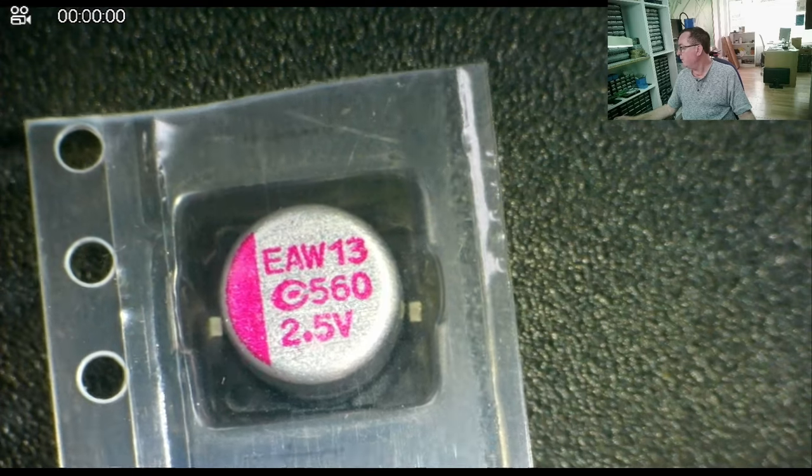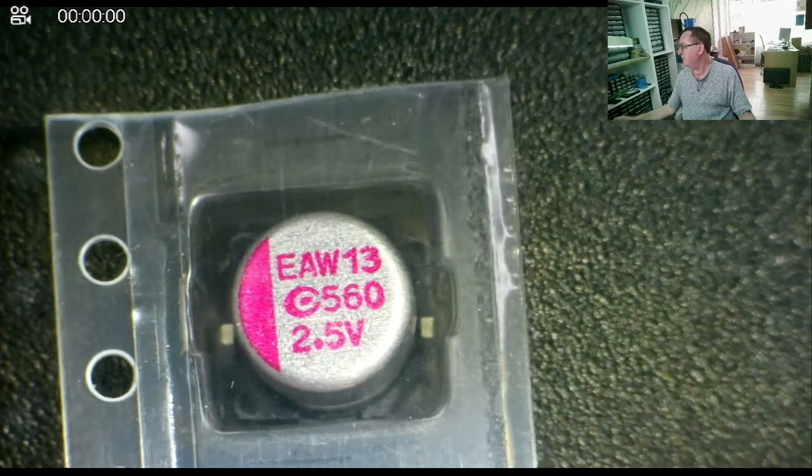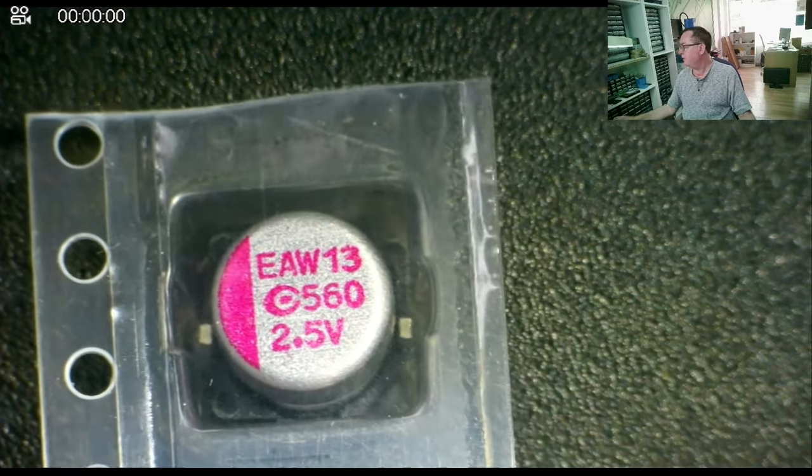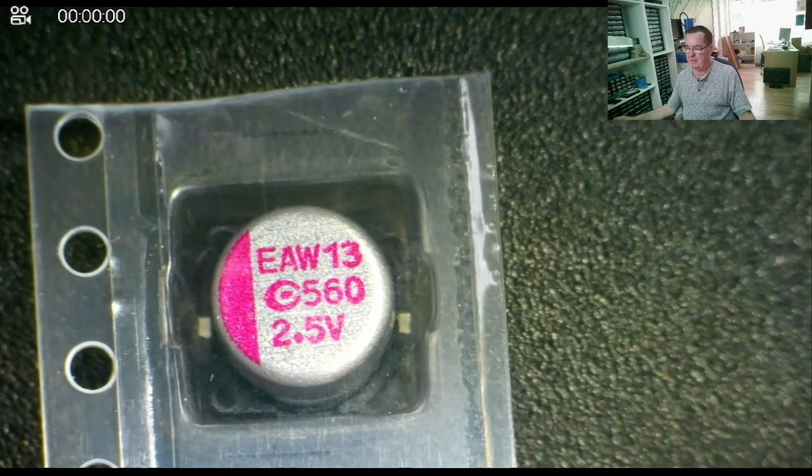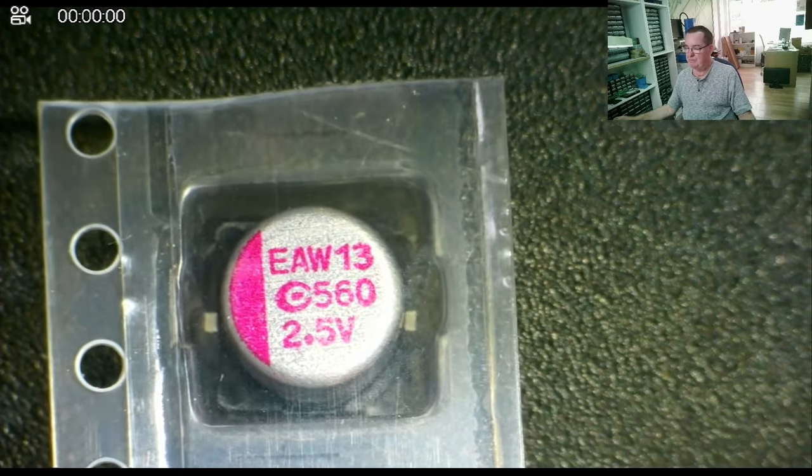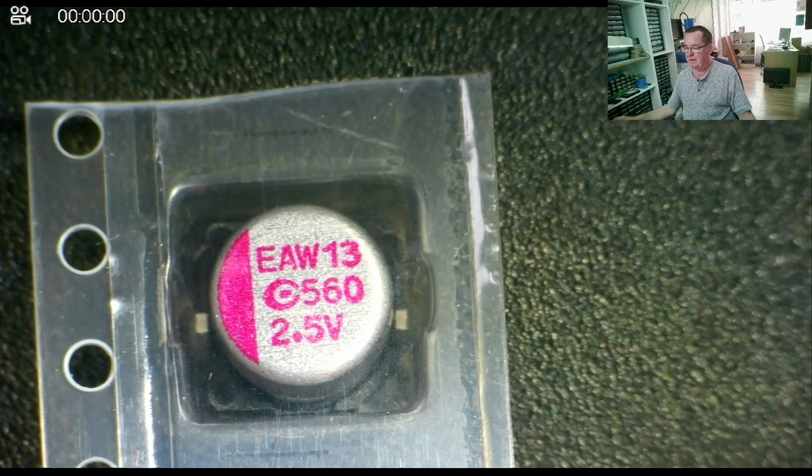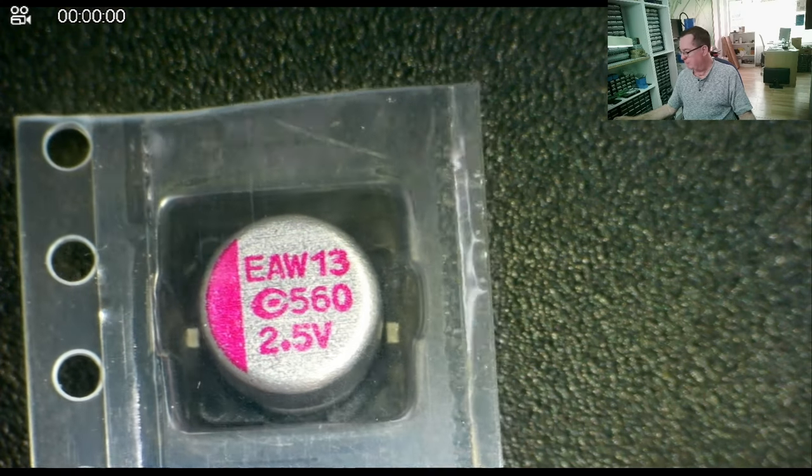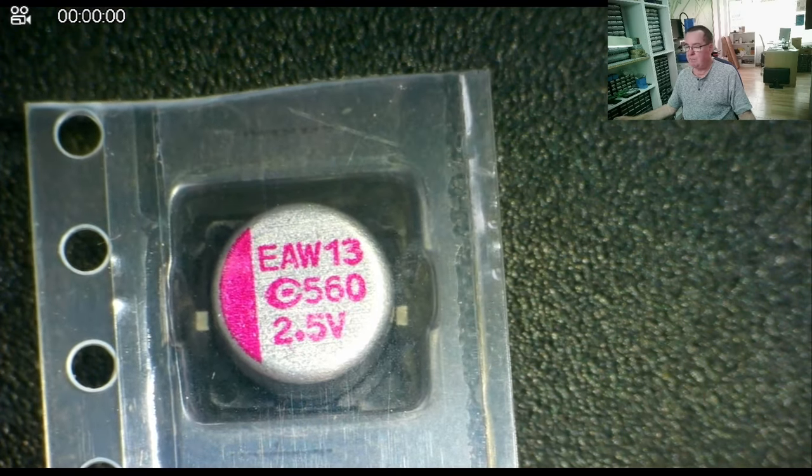Here's another one. So EAW will be the series, the type of capacitor. This is probably a batch or a date code. The funny little C type logo is the manufacturer. 560 microfarad, 2.5 volts. So those types of capacitors are not so difficult.